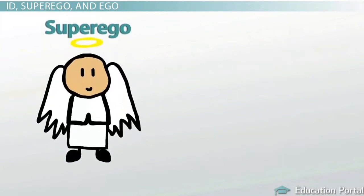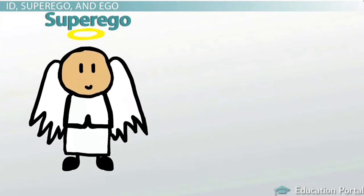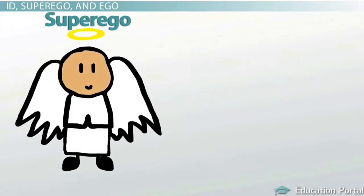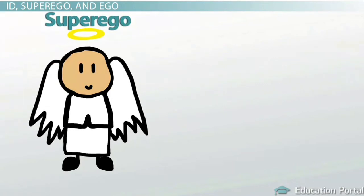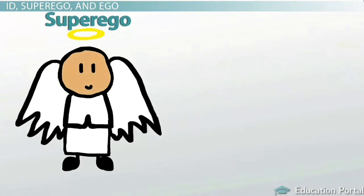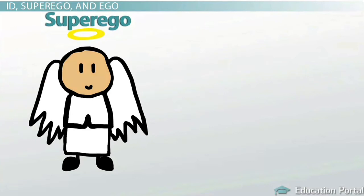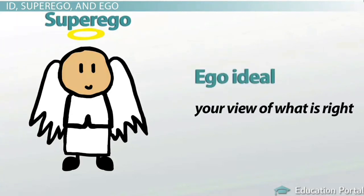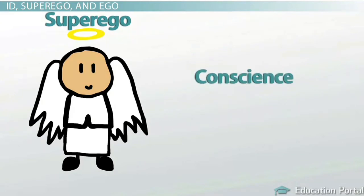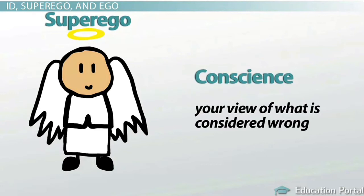Then there's the superego. The superego exists in all three levels of consciousness. The superego is like the little angel — it is always concerned with what is socially acceptable. The superego pushes you to obtain the ego ideal, or your view of what is right. It also represents your conscience, or your view of what is considered to be wrong.